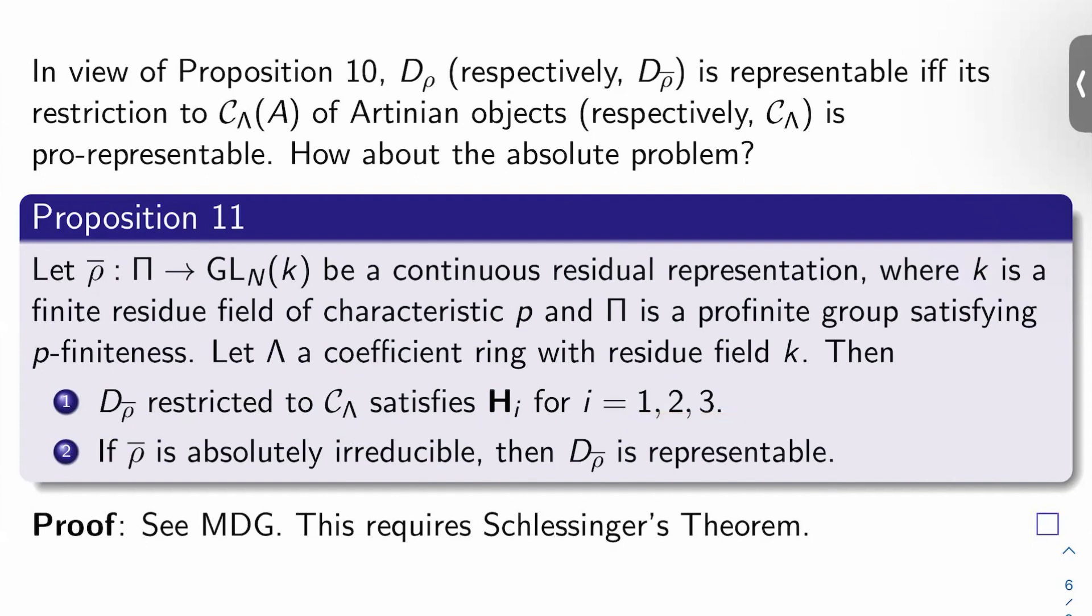So we're going to have a pro-representable hole. And two, if rho bar is absolutely irreducible, then D sub rho bar is representable. That's kind of one of the crucial results, if not maybe the main crucial result of this chapter. And so this is where you need Schlesinger's theorem to prove this representability of this absolute problem here. And also Mazur's original paper on deformation theory is a good source for a proof of this.